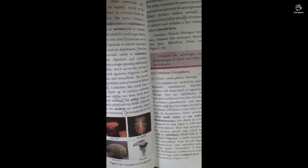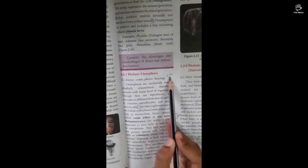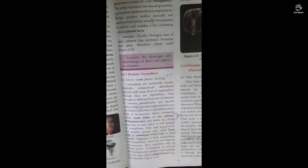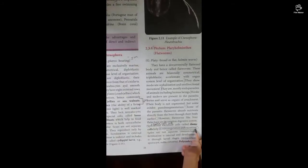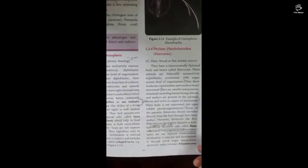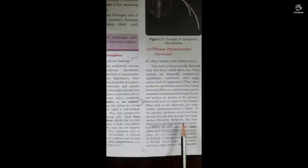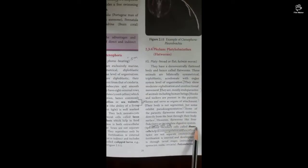Next is Phylum Ctenophora on page number 21 — this is a 5-mark question. Next is Platyhelminthes: what are flame cells? Flame cells are specialized excretory cells in Platyhelminthes — this is a 2-mark question and a 1-mark question.